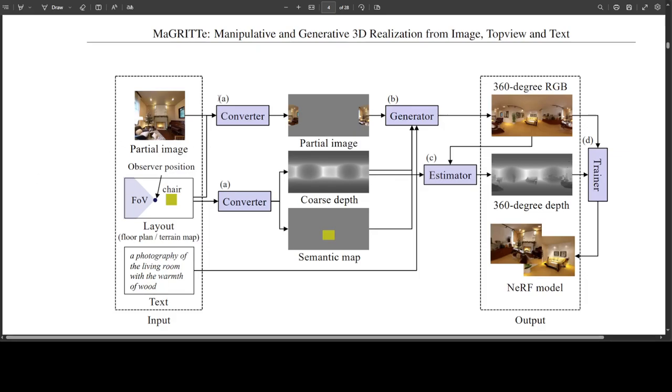And in this figure A, the partial image is converted to an ERP image from the observer position with the specified direction and field of view. The layout represented in the top view is converted to a coarse depth and a semantic map in ERP format with the observer position as a projection center.